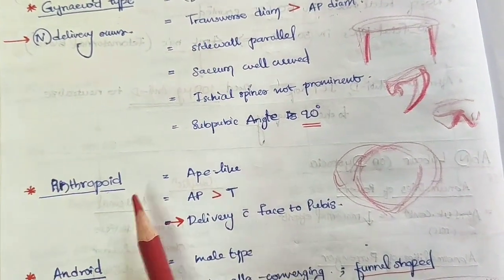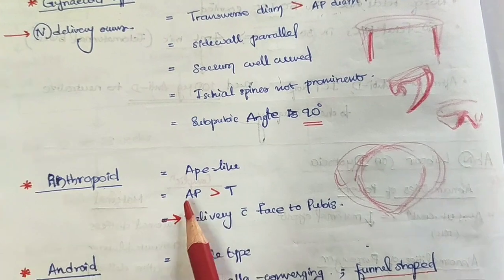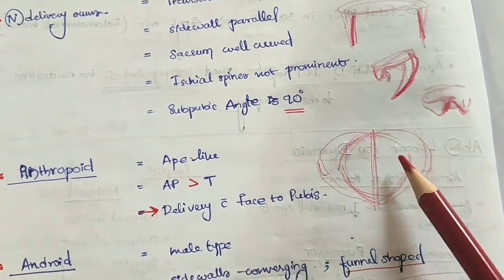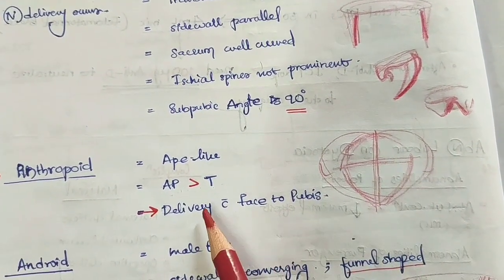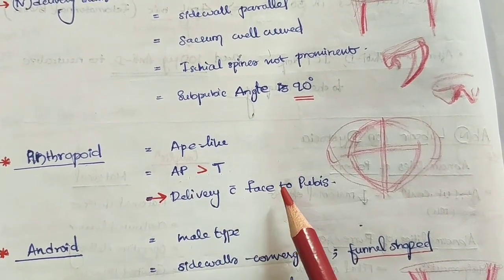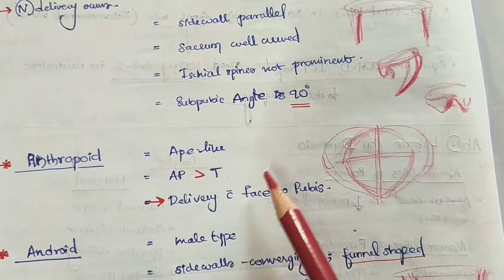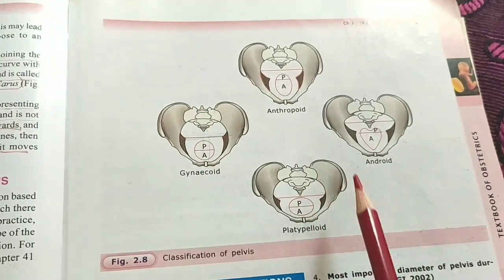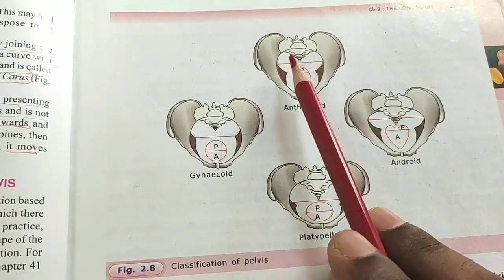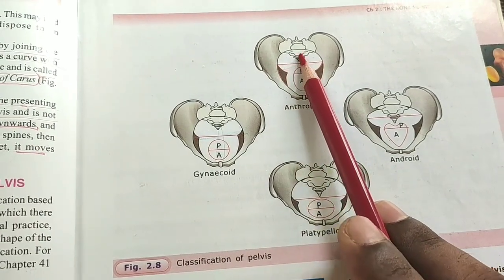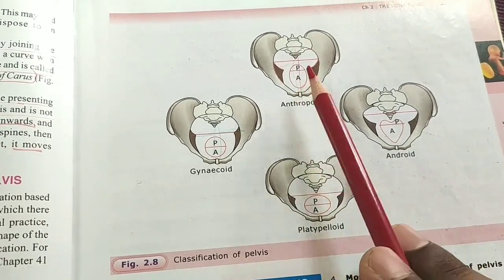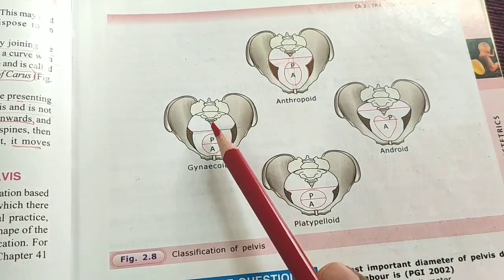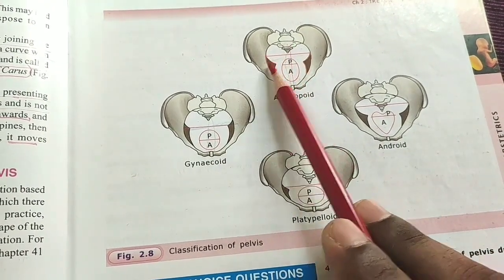In the anthropoid pelvis, it is an ape-like pelvis where the anterior-posterior diameter is greater than the transverse diameter. As a result, delivery occurs in the face-to-pubis position.